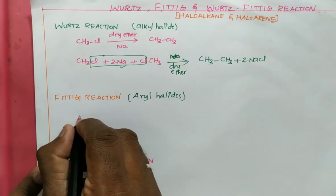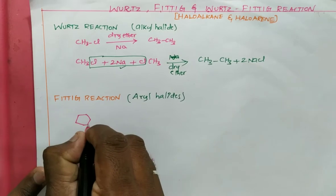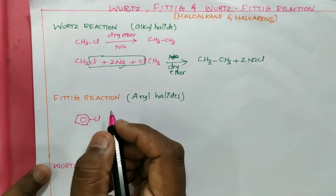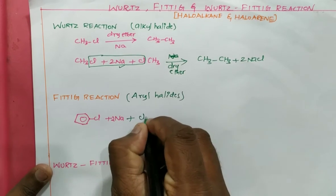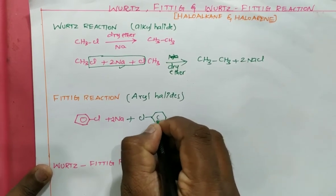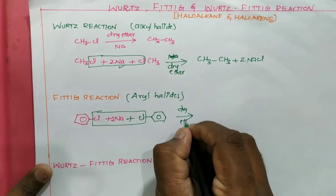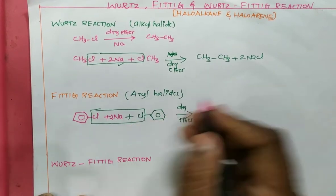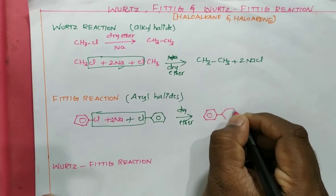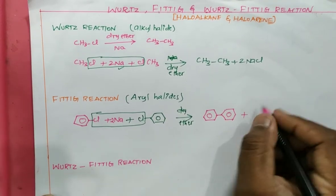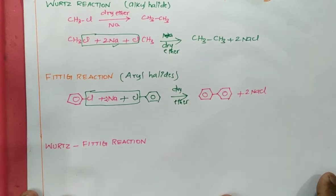In the Fittig reaction, higher arenes are obtained. Instead of alkyl halide, we take aryl halide — chlorobenzene — which reacts with metallic sodium and another chlorobenzene molecule in the presence of dry ether. With the elimination of 2NaCl, the product formed is biphenyl (also called diphenyl) along with NaCl. This reaction is entirely for aryl halides and is called the Fittig reaction.